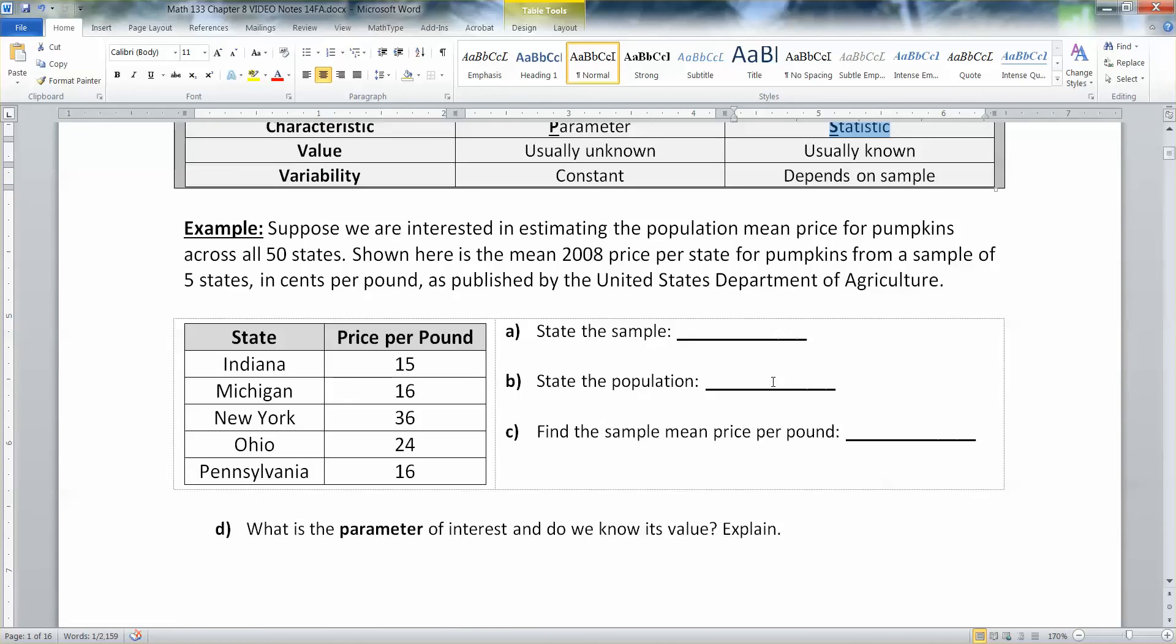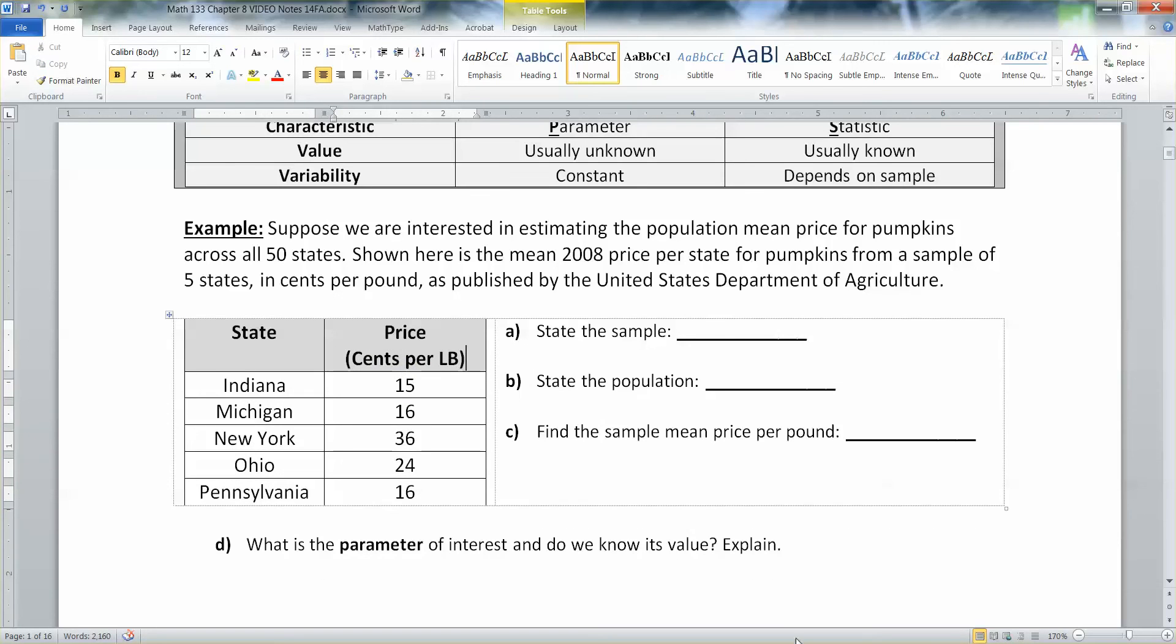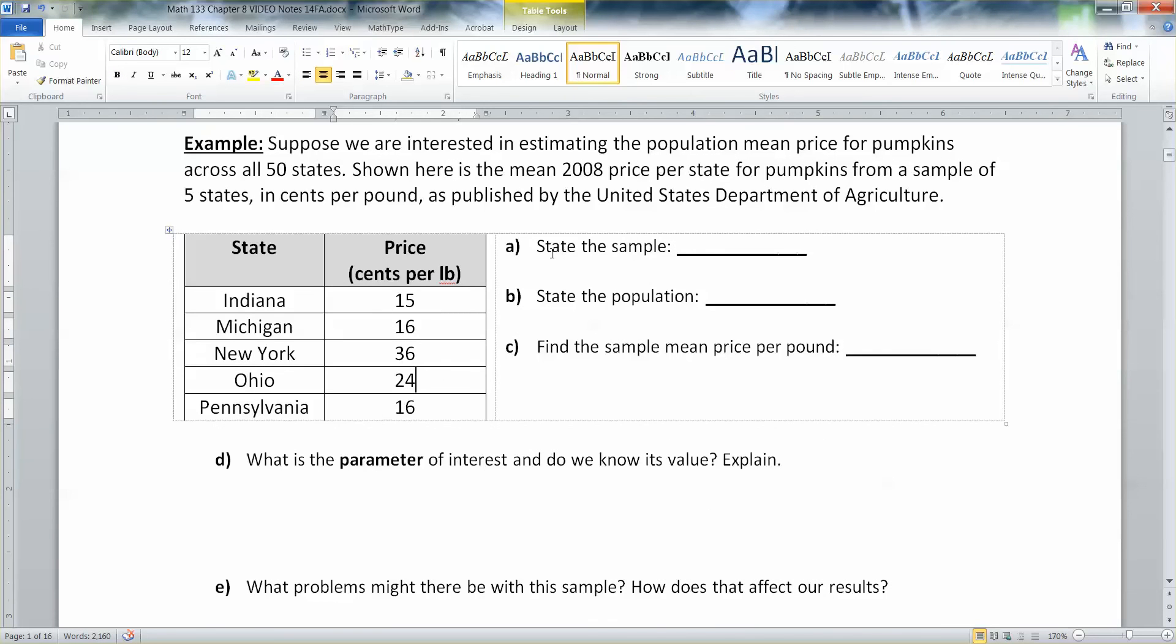So let's move away from big ideas for just a second and think about pumpkins. So suppose you want to estimate the population mean price for pumpkins from all 50 states. So you want to know the average price for pumpkins across all 50 states. It's close to Halloween. Who knows? So here we have the mean price per state for pumpkins from a sample of five states in cents per pound. So there are the five states. There is the price in cents per pound.